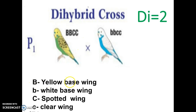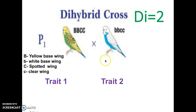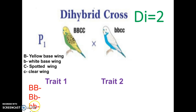We're going to represent yellow with a capital B because this is going to be dominant. We're going to represent the color white with lowercase b. If a bird is spotted — meaning it has those little black spots — that is a capital C for the dominant trait. And if it is clear wing, that is going to be lowercase c for clear wings. You need to make sure that you understand the two different traits, including what happens when you have homozygous dominant, heterozygous, and homozygous recessive alleles for each trait.